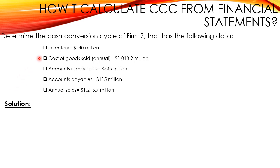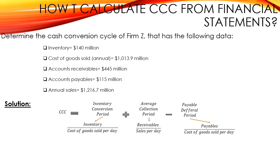So how could we calculate the cash conversion cycle of Firm Z using these data? We know that the formula of the cash conversion cycle is: inventory conversion period plus average collection period minus the payable deferral period. To determine the inventory conversion period, we should use this formula: inventory over cost of goods sold per day.